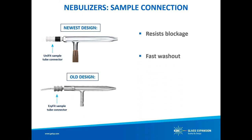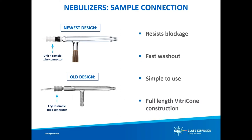The U-Series provides the fastest washout. Since there is zero dead volume — meaning there is nowhere for sample to be trapped — the fastest possible washout and highest sample throughput is achieved. It's the simplest to use: our proprietary Uni-Fit connector slides easily over the sample inlet and creates an excellent seal. It also allows for full-length vitricone construction from end to end, where the sample channel is constructed from a heavy glass capillary machined to very tight tolerances. More information about the vitricone is available in our Nebulizers 101 on-demand webinar.